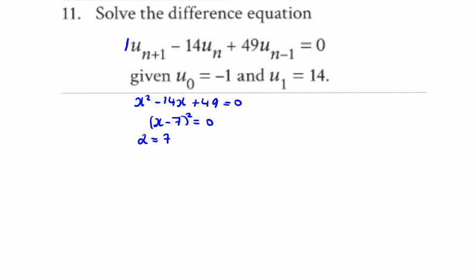So we have alpha is 7, beta is 7. un in this case becomes l times alpha to the power of n plus mn beta to the power of n.